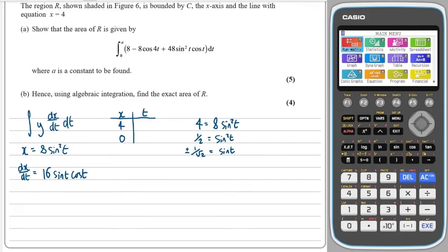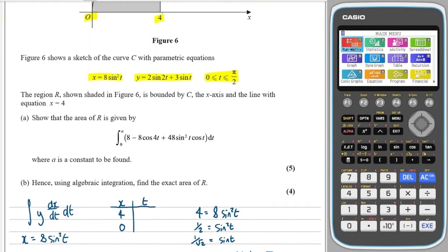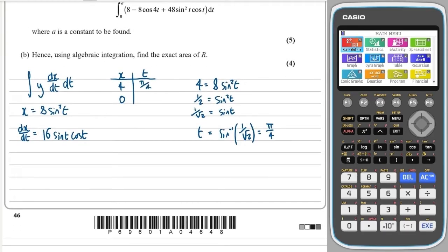Taking the positive first, we get t = sin⁻¹(1/√2), and we know that's equal to π/4. Taking the negative would give −π/4, which is not in our region, so we only use the positive one — remember we need t between 0 and π/2. For x = 0, we get 8sin²t = 0, so sint = 0, which gives t = 0.